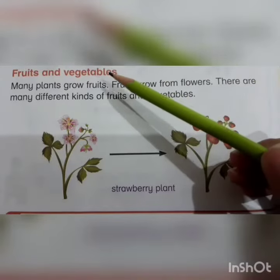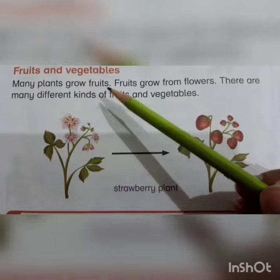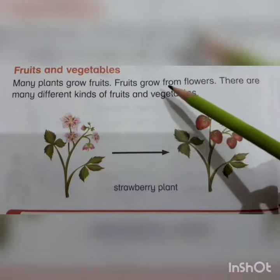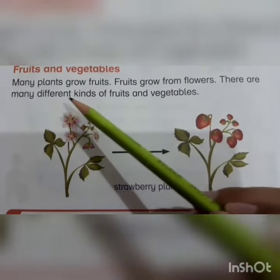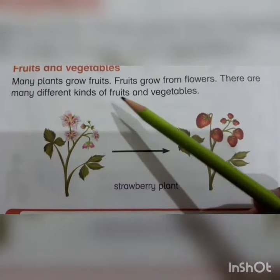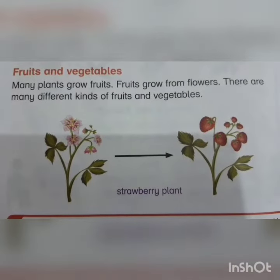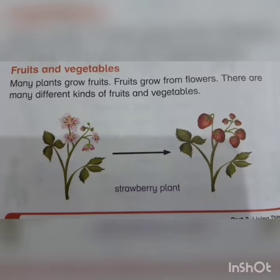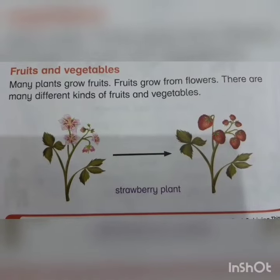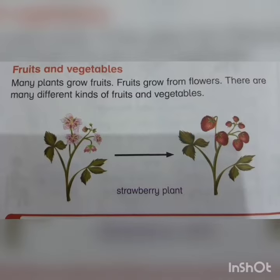Fruits and vegetables. Many plants grow fruits. Fruits grow from flowers. There are many different kinds of fruits and vegetables. There are many fruits that are grown from flowers, and many different kinds and forms of fruits or vegetables in this world.